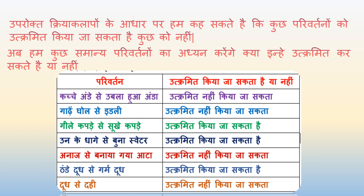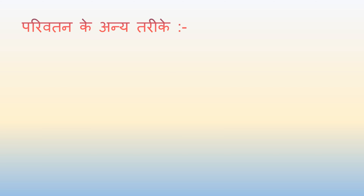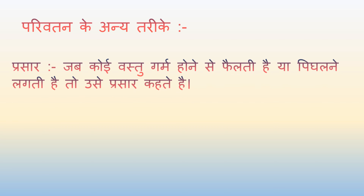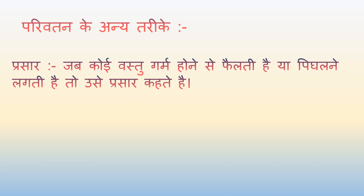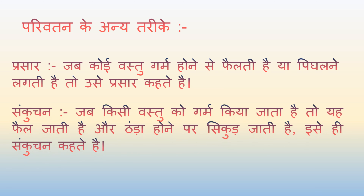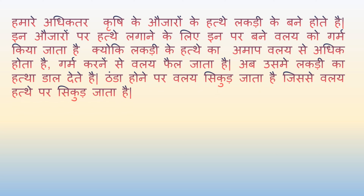अब परिवर्तन के कुछ अन्य तरीके हैं जैसे प्रसार — जब कोई वस्तु गर्म होने से फैलती है या पिघलने लगती है तो उसे प्रसार कहते हैं। और संकुचन — जब किसी वस्तु को गर्म किया जाता है तो वो फैल जाती है और ठंडा करने पर वो सिकुड़ जाती है, इसे संकुचन कहते हैं।